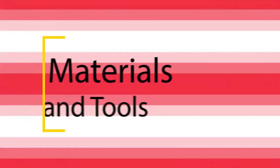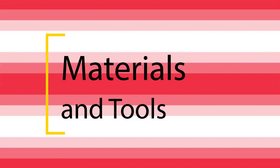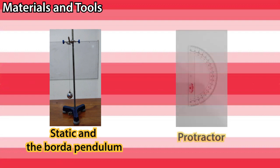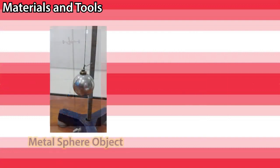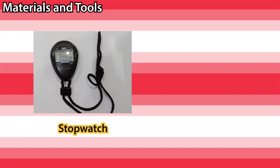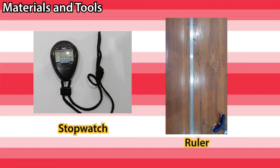The materials and tools for the gravitational constant experiment using the border pendulum are: a stand and the border pendulum itself; a protractor to measure the angles at which you swing the string; metal sphere objects — which should be completely spherical; a Vernier caliper to measure the diameter of the metal sphere; a stopwatch to record the swinging time; and a ruler to measure the length of your string.